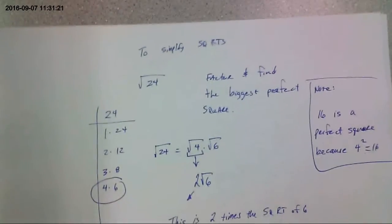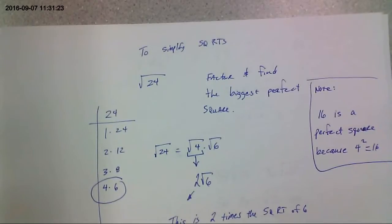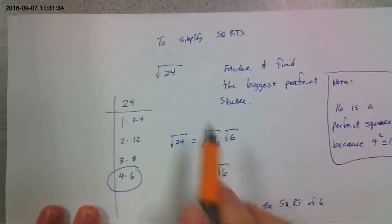So, on to simplifying square roots. The way you simplify a square root is you factor the radicand and you look for the biggest perfect square. Now if you don't know what a perfect square is, perfect square is like 16 is an example because 4 squared is 16. 25 is a perfect square because 5 squared is 25.